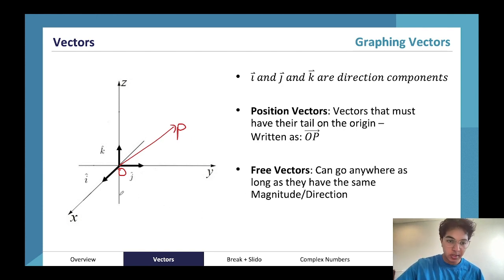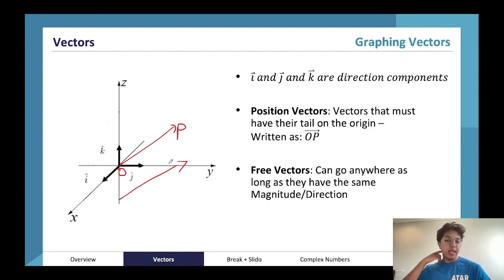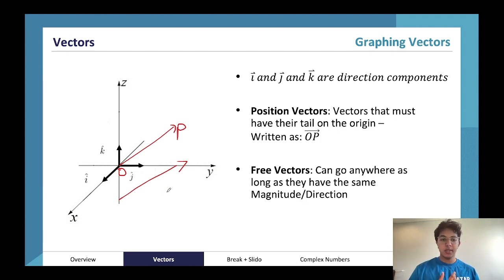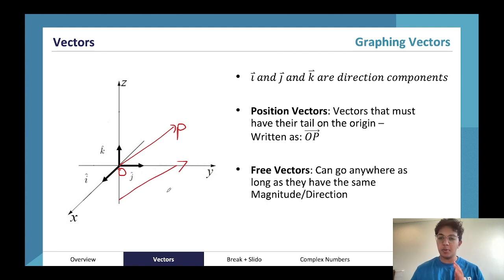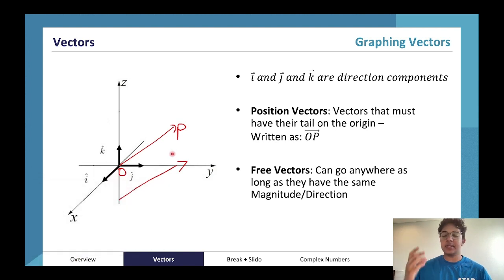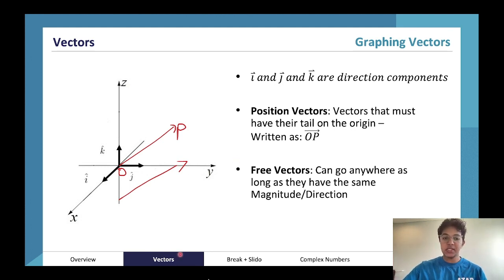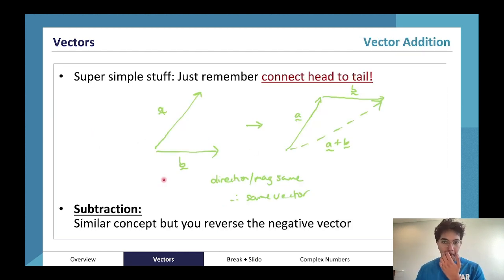Vectors can go anywhere as long as they have the same magnitude and direction — so another vector elsewhere could technically be equal to OP if it has the same components. Try to think of vectors as showing change in position or change in something. The easiest way to think about it is as showing change in position in a three-dimensional area.